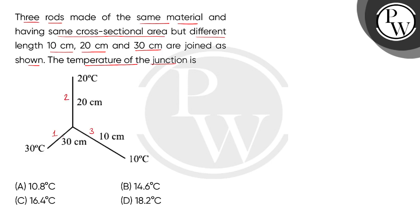अब मान लेते हैं कि rod number 1 के एक end का temperature high है — हम देख सकते हैं 30°C, जो कि 10°C और 20°C से higher है। तो यहाँ से heat enter करेगी और दोनों rods में distribute हो जाएगी।